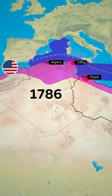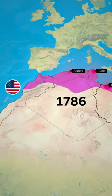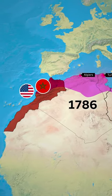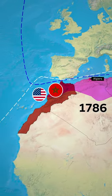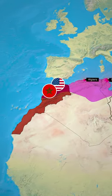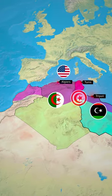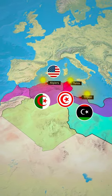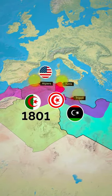In 1786, the United States signed a treaty with the ruler of Morocco to protect American merchant vessels from attack. However, the other Barbary States continued their aggressive actions, leading to the First Barbary War in 1801.